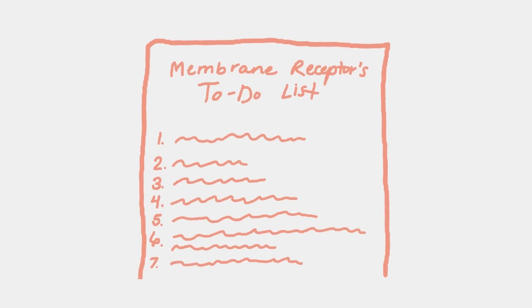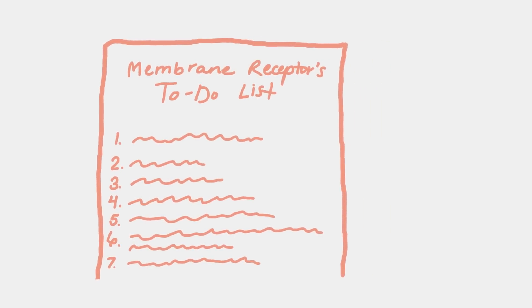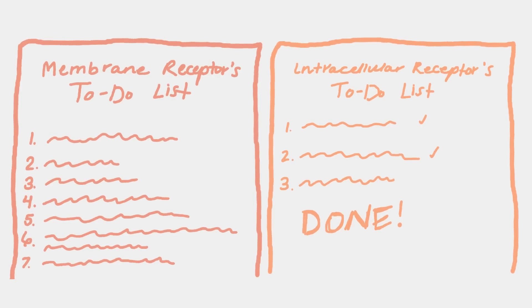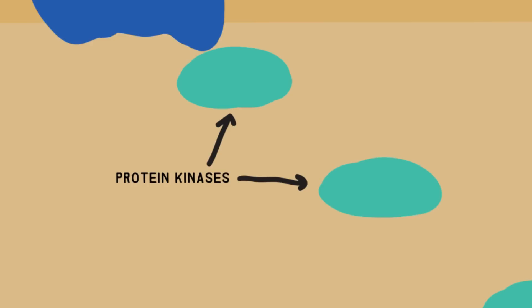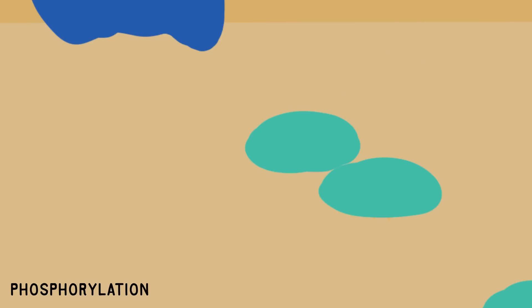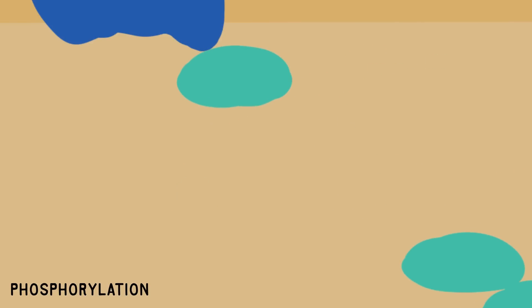Transduction is usually a multi-step process for signals using a membrane receptor. Intracellular receptors do most of the transduction for the message in the reception stage. In transduction, the receptor protein changes and initiates other changes within the cell. This signal transduction pathway will interact with several relay molecules, which are typically protein kinases. These proteins use a phosphate from ATP to activate another molecule — in this case several more protein kinases — through phosphorylation. This method of relaying the signal through a chain of energy is called a phosphorylation cascade.